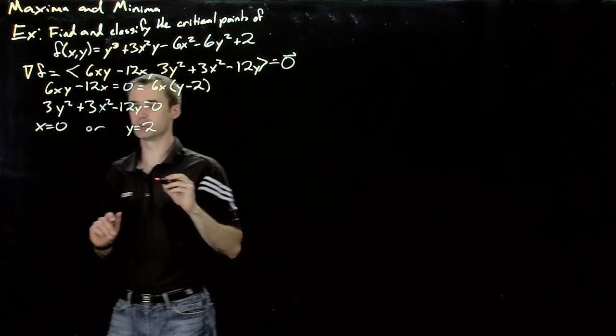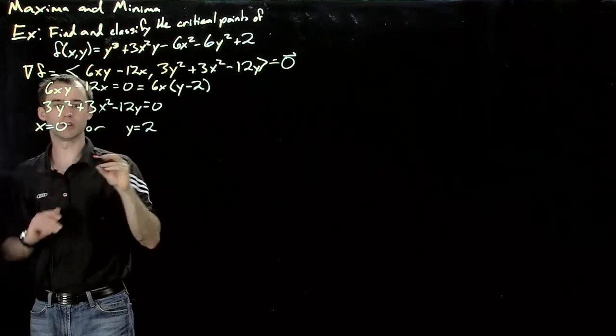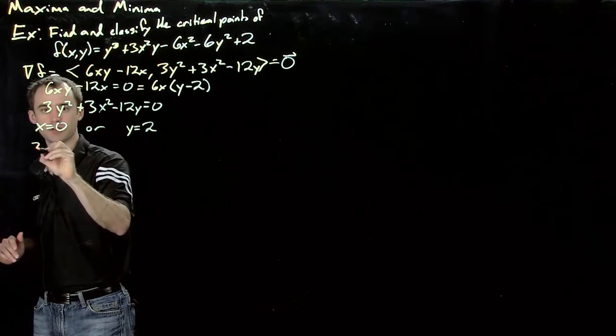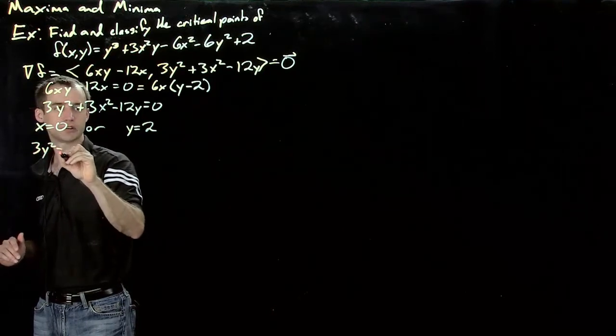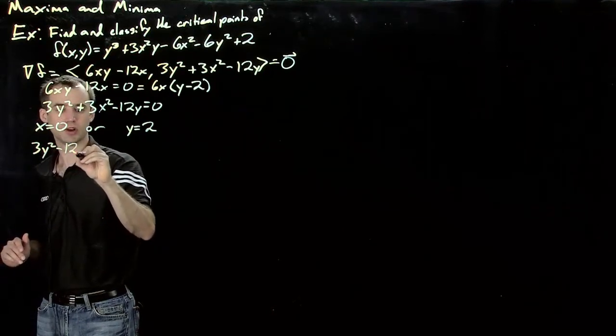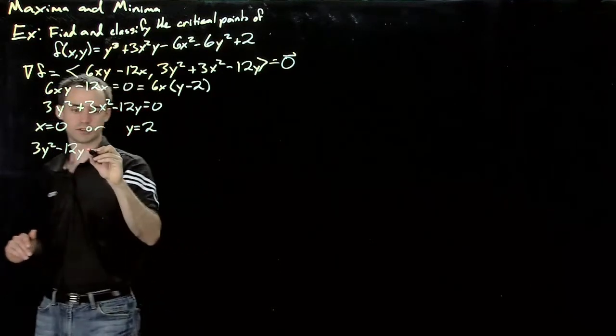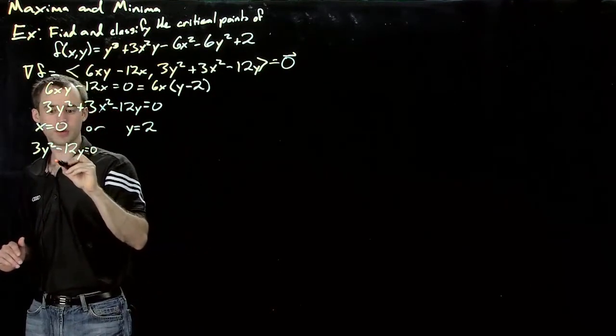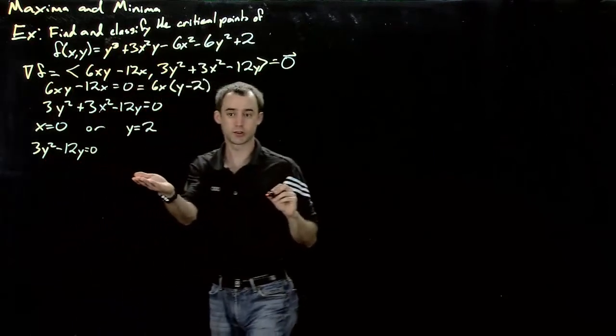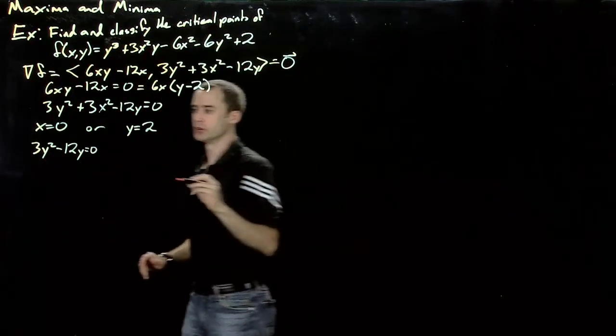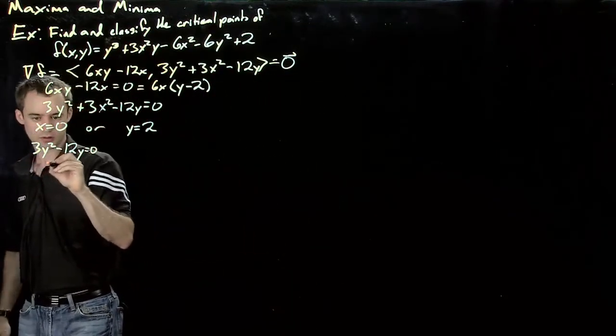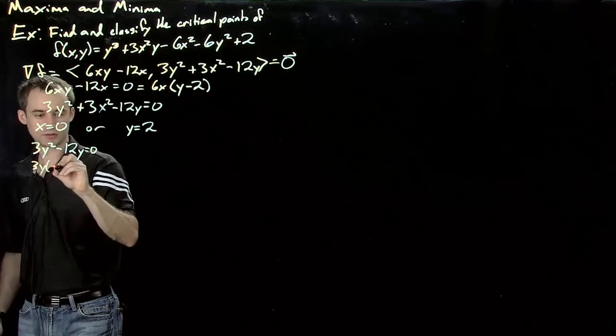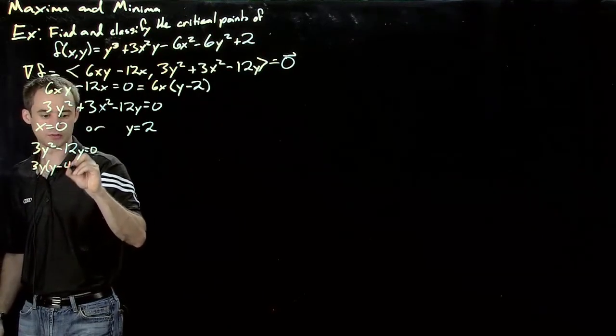If x equals 0, then this second equation becomes 3y squared minus 12y. Well, that's equal to 0. And we can again factor this, factor out a 3y, and we'll get 3y times y minus 4.